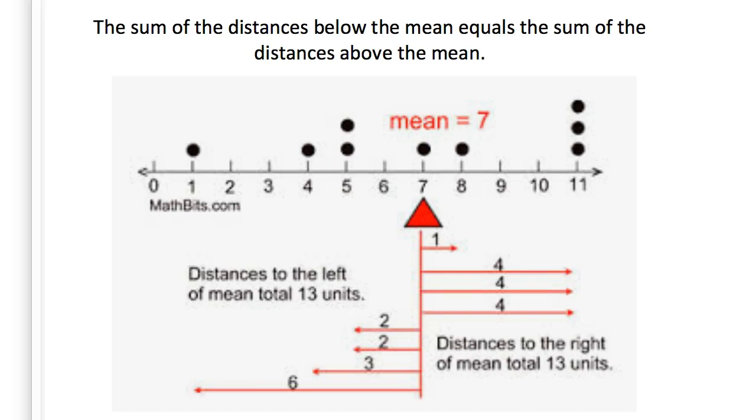Another way to think about the balancing point is to think about how far the data points are from the mean. The mean is the value that balances the distances on either side of it. For example, in this distribution, the mean is at seven. It's marked with a red triangle. The distances of the data points from the mean are shown as red line segments below the dot plot.